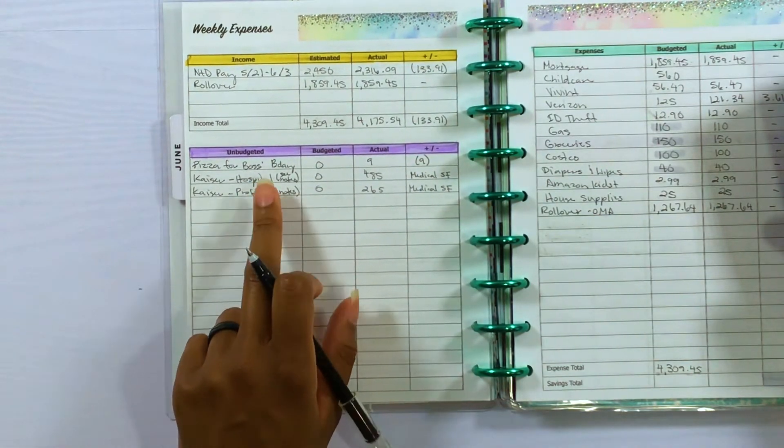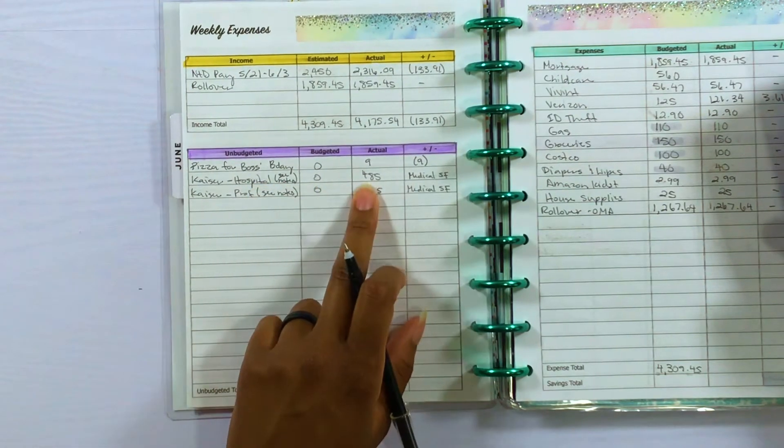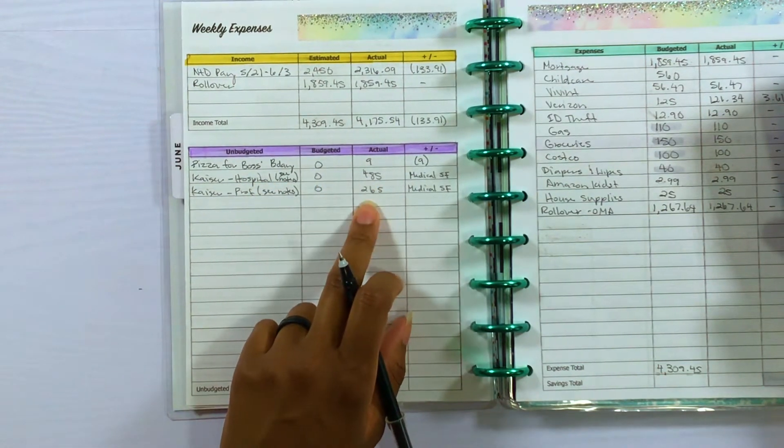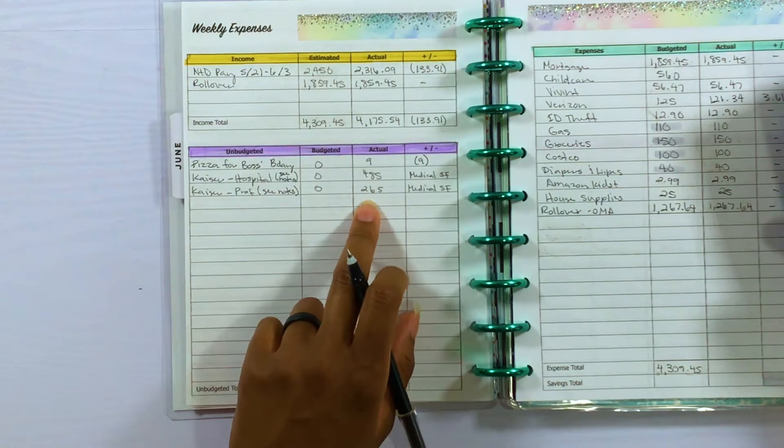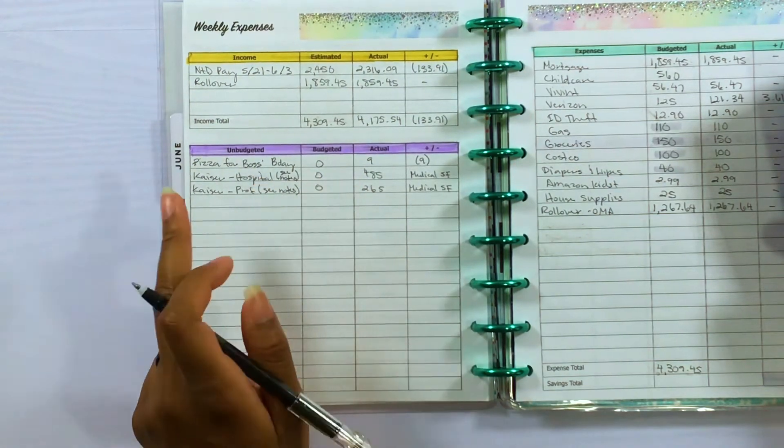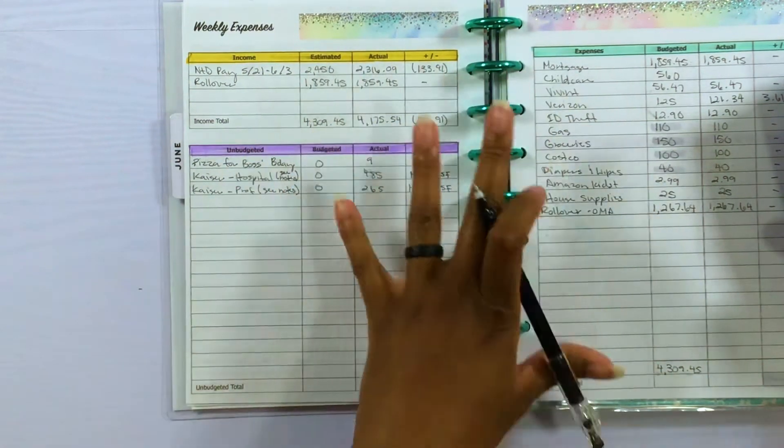And then we did have two hospital bills come in - one was for $485 and the other one was for $265. But those two expenses came out of our medical sinking funds, not out of the money that came in for this paycheck.